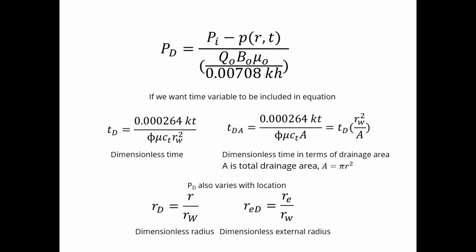Dimensionless pressure also varies with location, where dimensionless radius is equal to radius over wellbore radius. And also dimensionless external radius, where drainage radius is divided by wellbore radius. Both dimensionless.